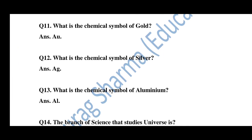Question number 11: What is the chemical symbol of gold? Answer: AU. Question number 12: What is the chemical symbol of silver? Answer: AG. Question number 13: What is the chemical symbol of aluminium? Answer: AL.